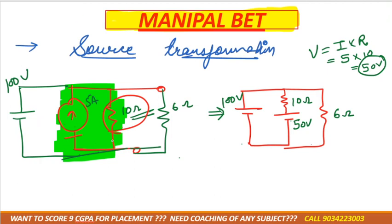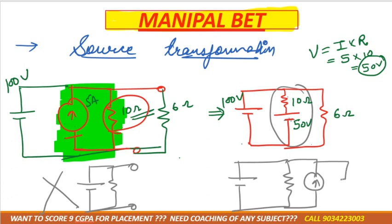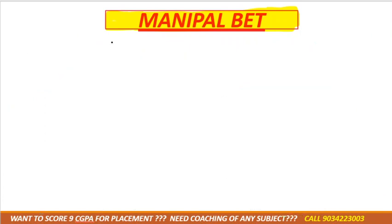You can also convert a voltage source into a current source. The condition is: if the resistor is connected in series with the voltage source, you can convert it; if connected in parallel, you cannot. The 100 volt stays, and 10 ohm is connected in parallel with the current source. Current I = V/R = 50/10 = 5 ampere — the same result.